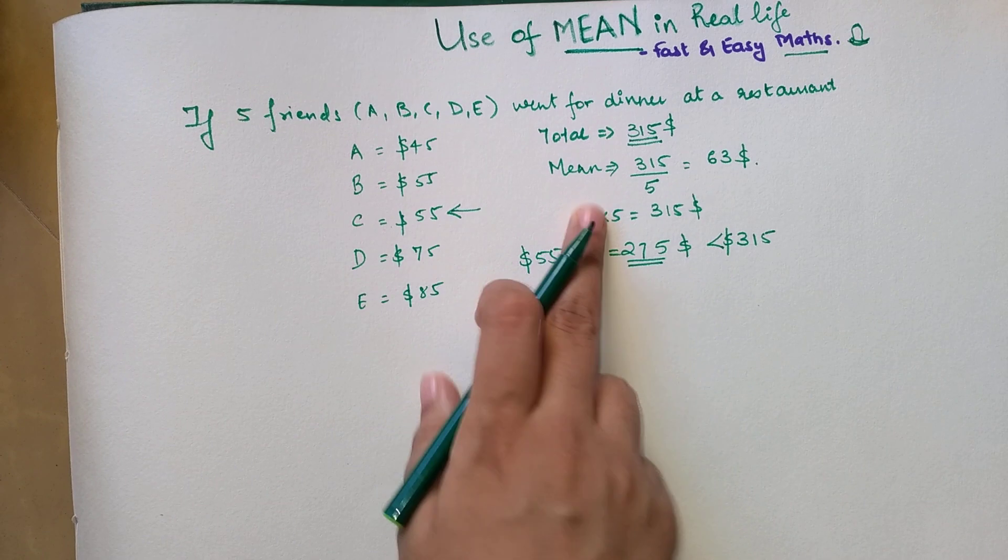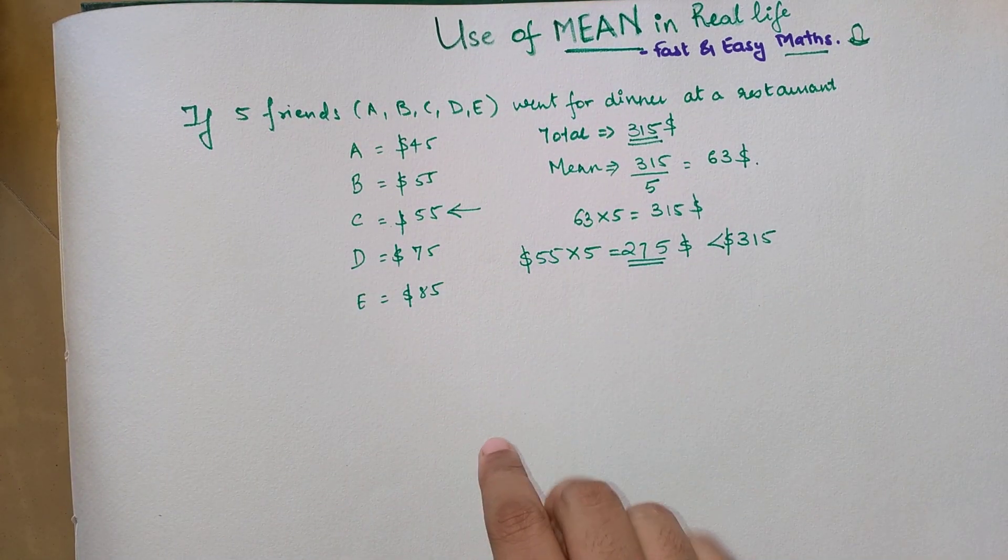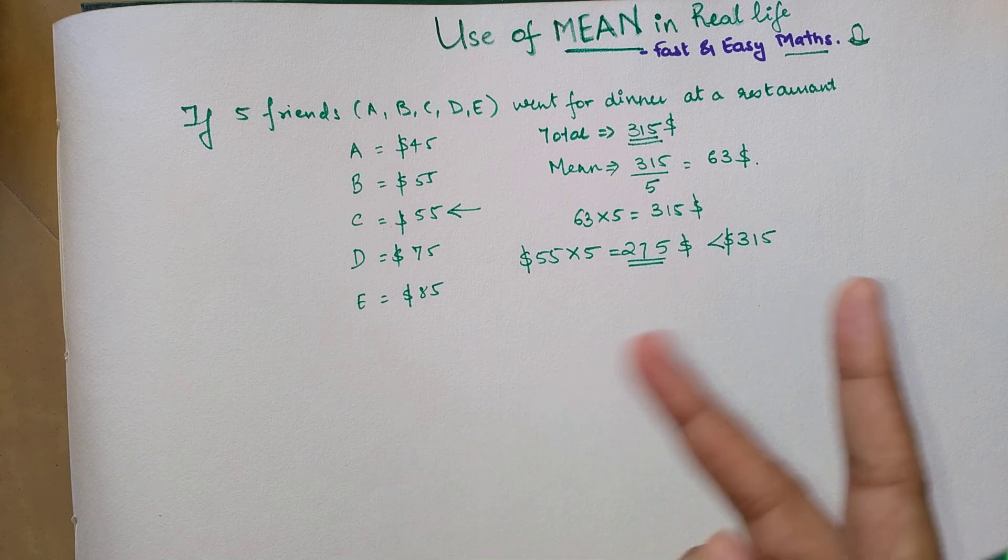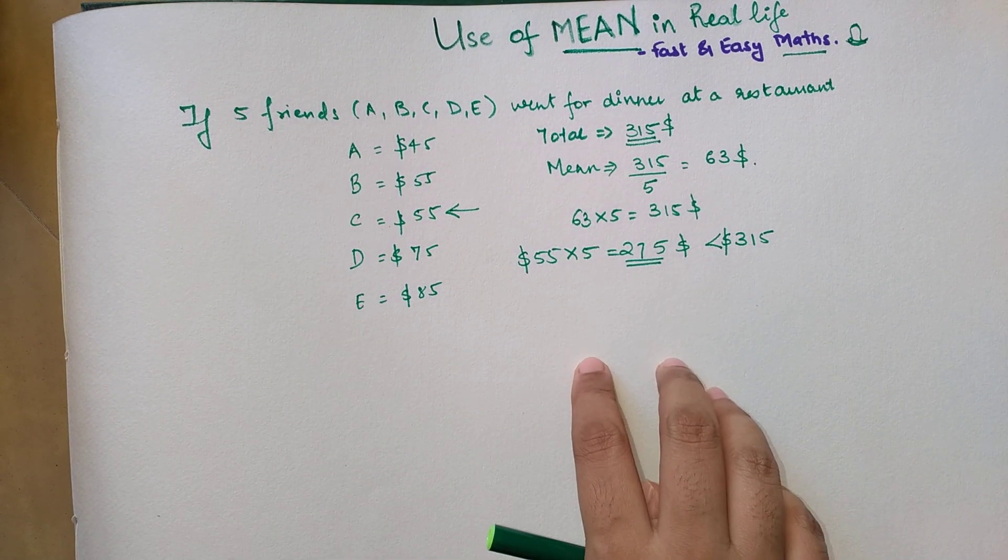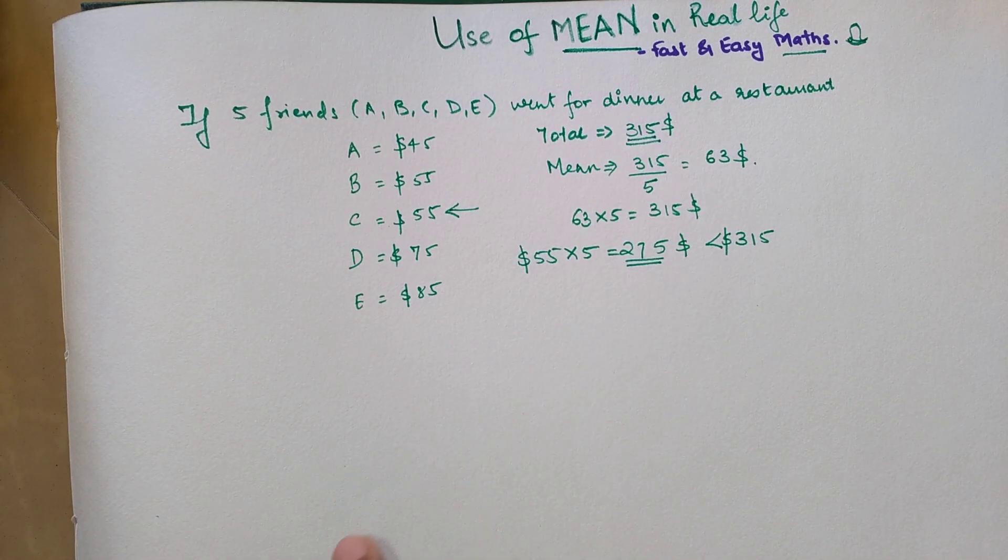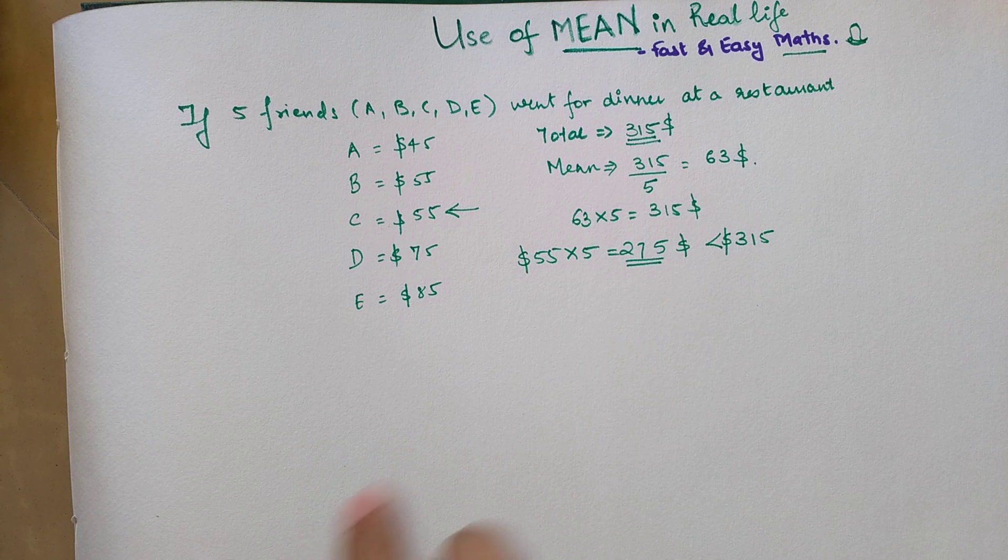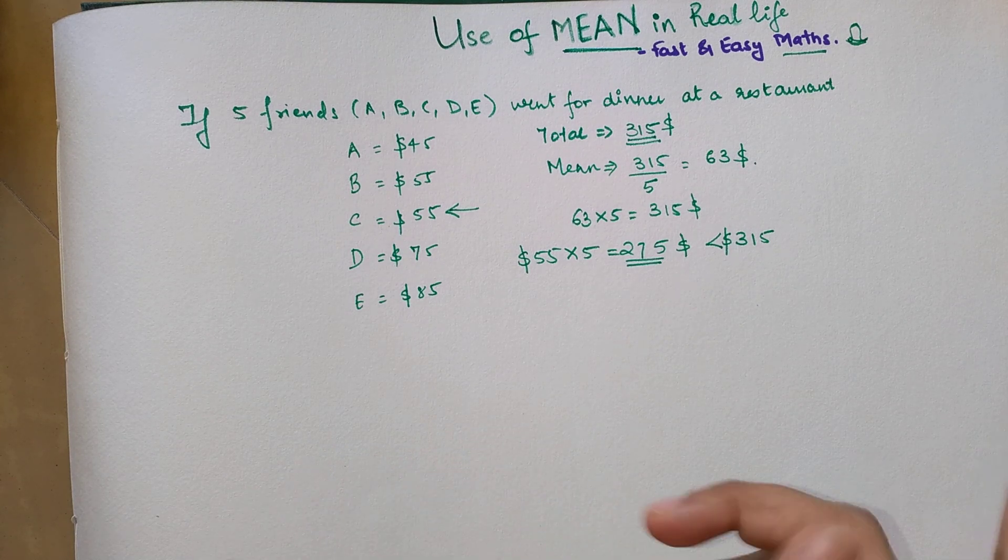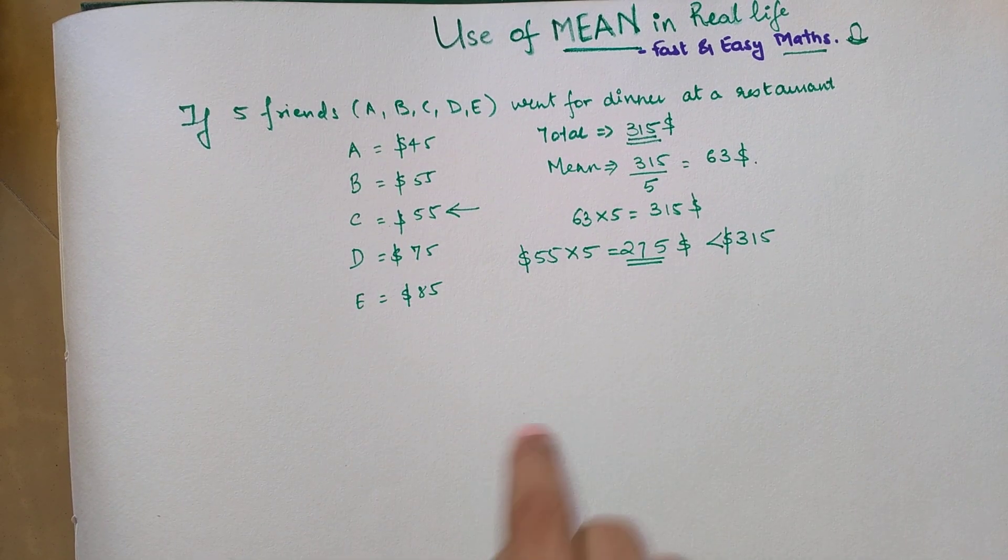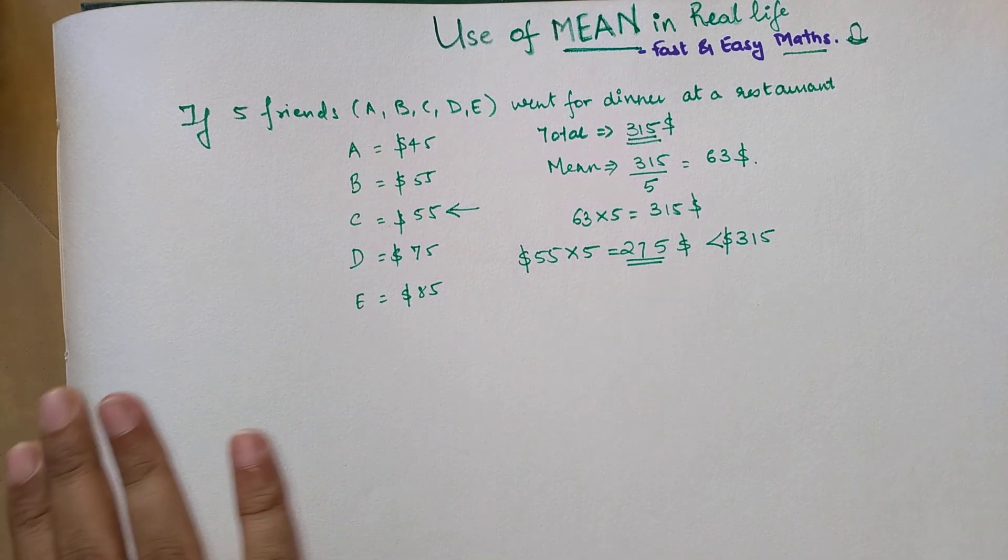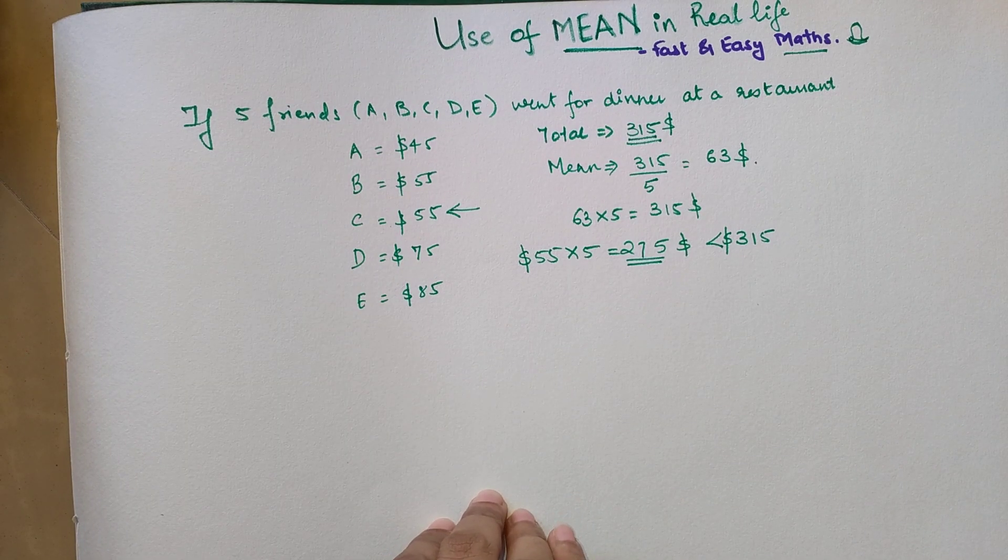Here also, students, we have three kinds of mean: arithmetic mean, geometric mean, and harmonic mean. I'm working on those videos as well where I'll tell you in which scenario you should use which mean. But for now, I am going to push another video next week where I'll tell you how use of median supersedes everything else in a real-life situation. Do stay tuned to my channel.